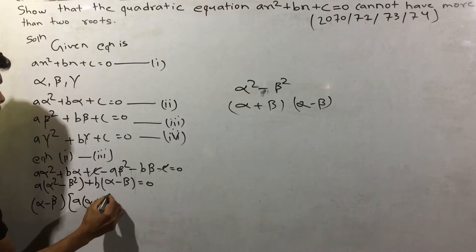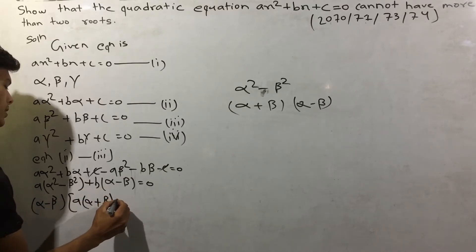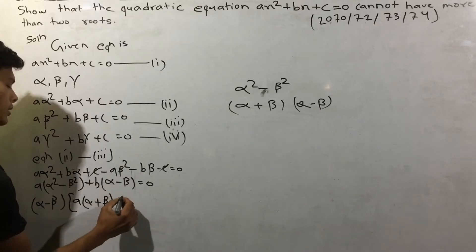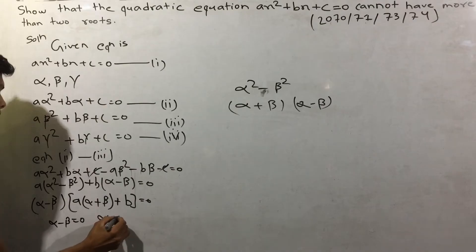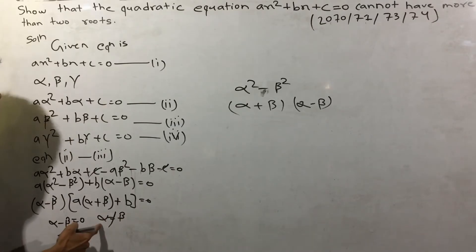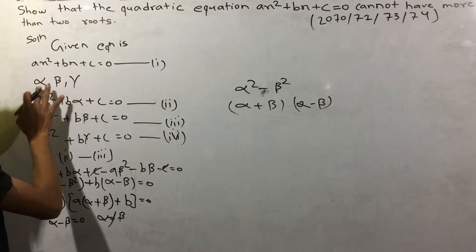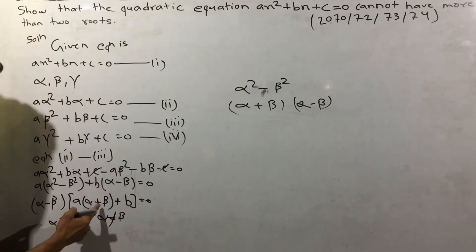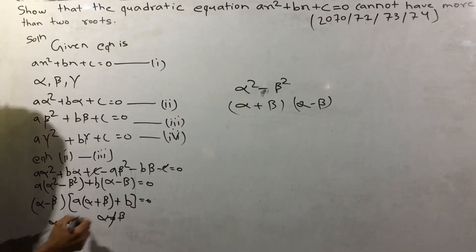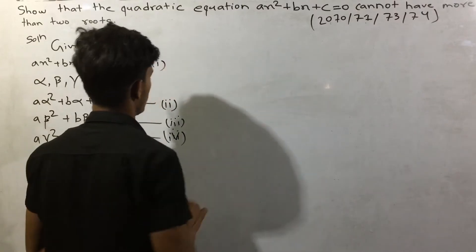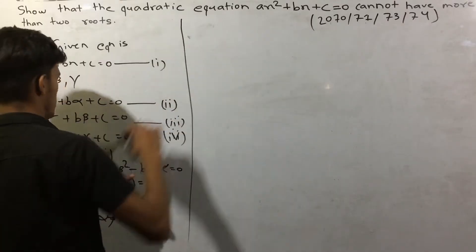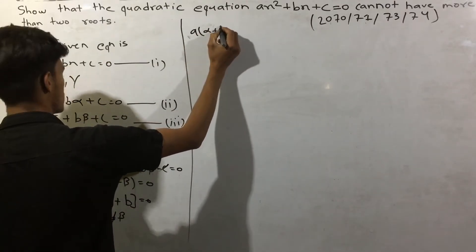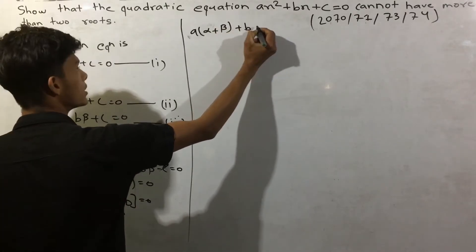Alpha plus b gamma plus c is equal to zero. a alpha plus c minus alpha plus c is equal to alpha plus b gamma plus b minus alpha plus b plus c is equal to zero.